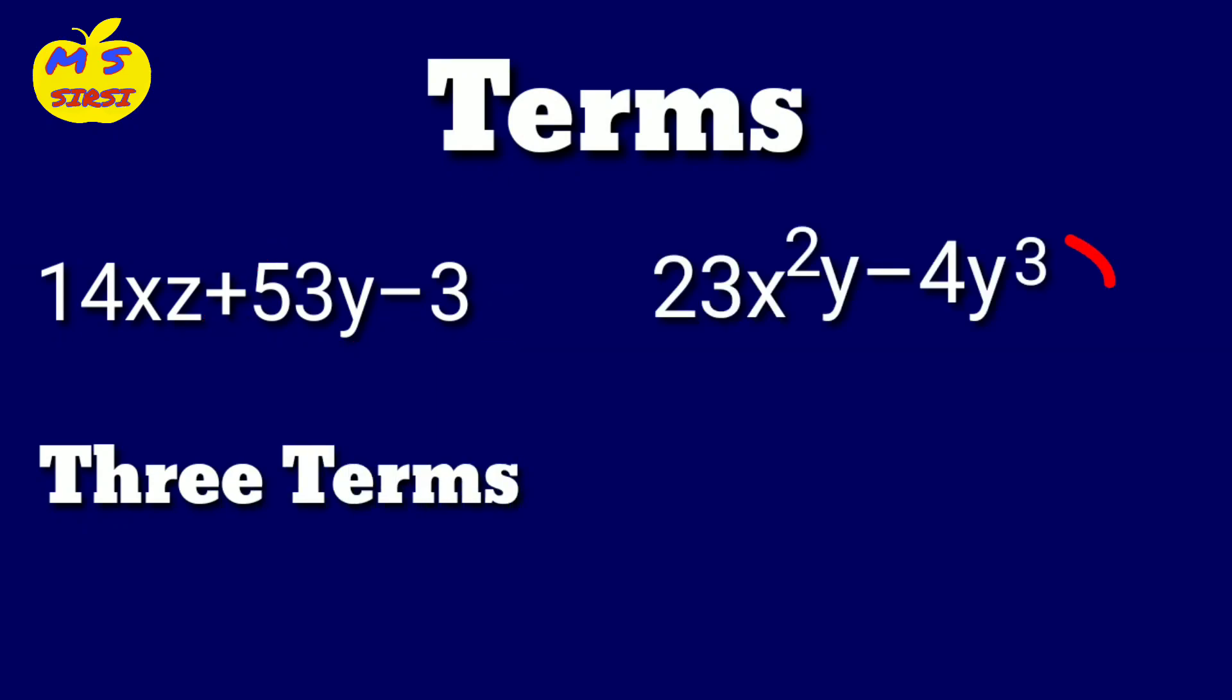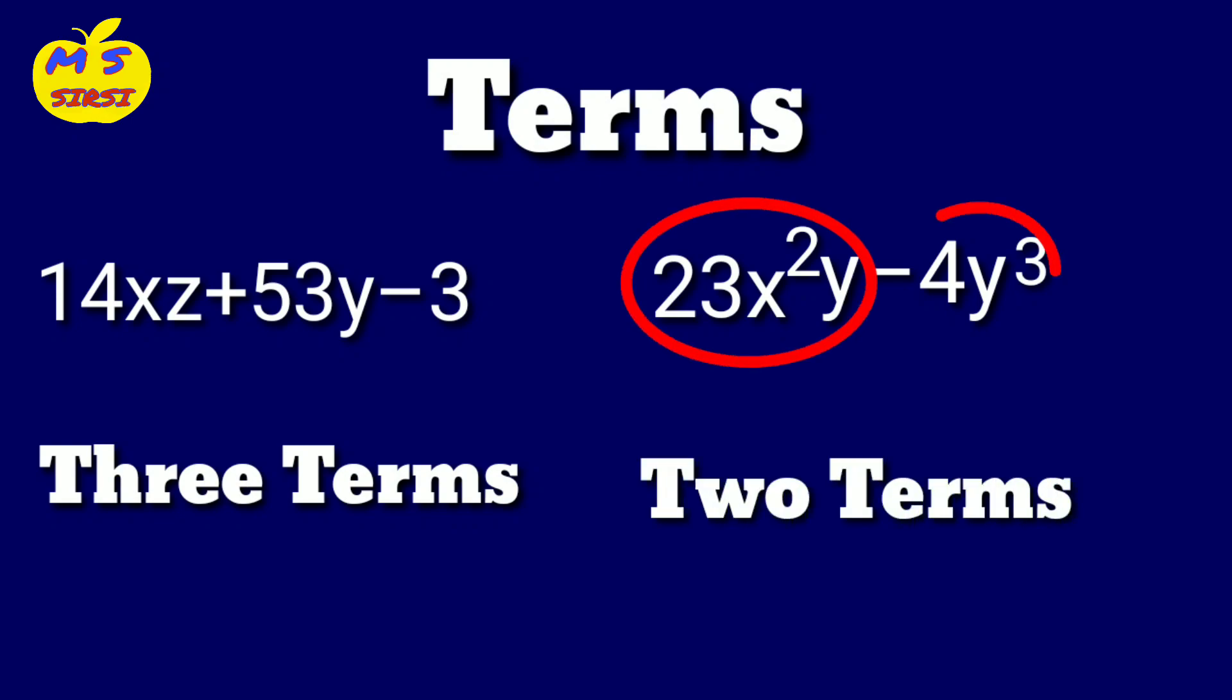The second expression is 23x square y minus 4y cube. The second expression has two terms: 23x square y and 4y cube.